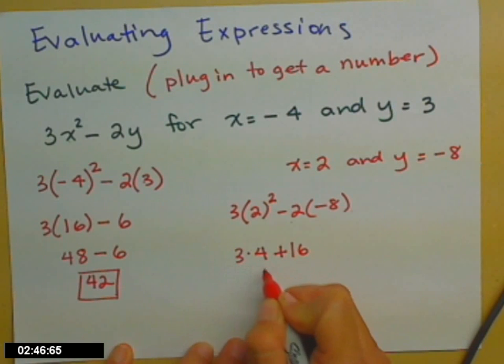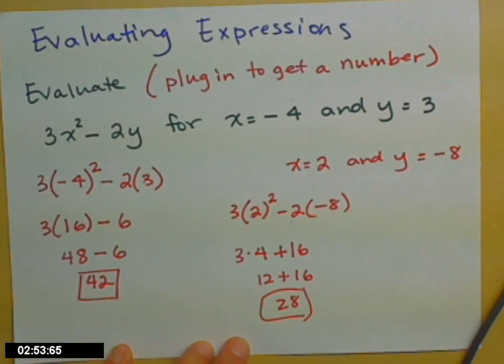So now PEMDAS multiplication, 3 times 4 is 12, plus 16, gives me a final result of 28.